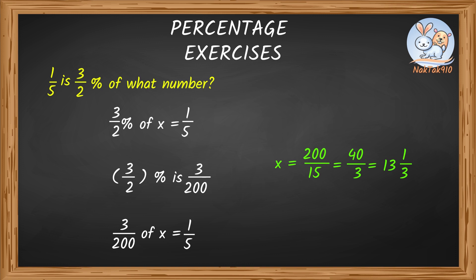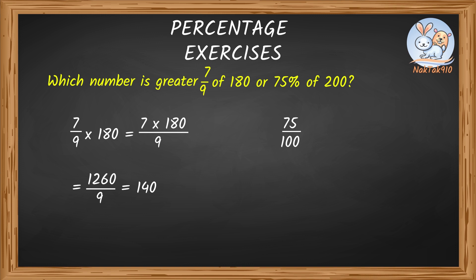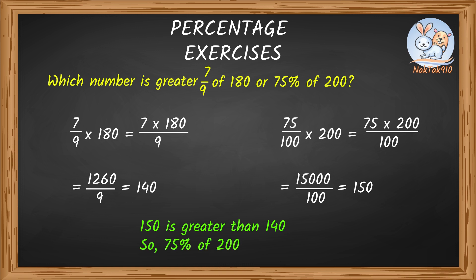Now, tell me, which number is greater? 7 by 9 of 180 or 75% of 200? Tack, let's solve both of them and then compare them. Let's take 7 by 9 of 180. 7 times 180 gives us 1260. 1260 divided by 9 gives us 140. Now, let's take 75% of 200. 75% can be written as 75 divided by 100. 75 divided by 100 times 200 gives us 15,000. 15,000 divided by 100 gives us 150. So 150 is greater than 140. So 75% of 200 will be greater.